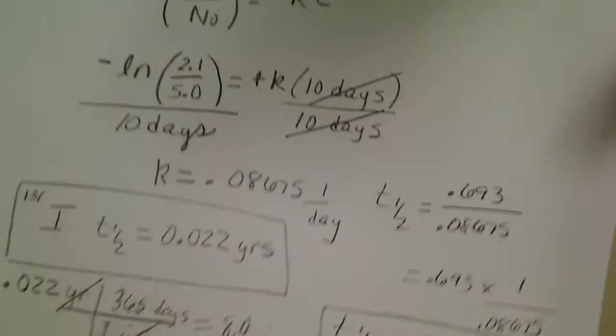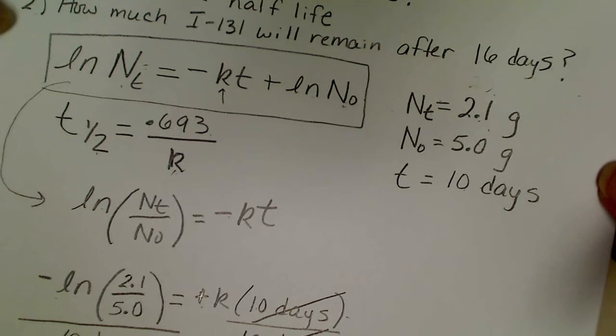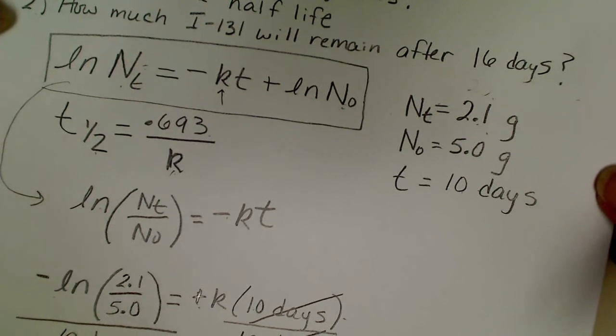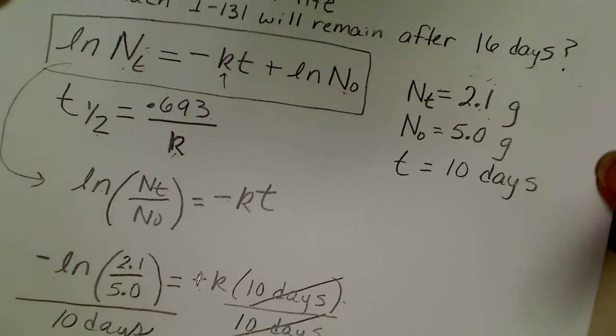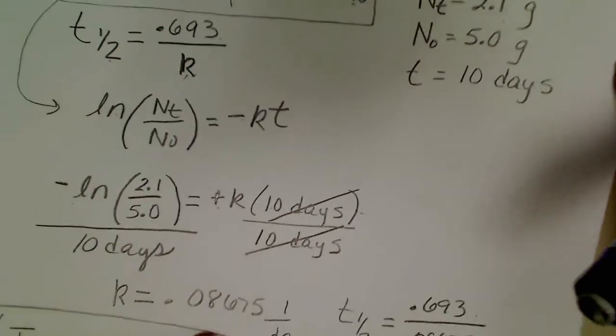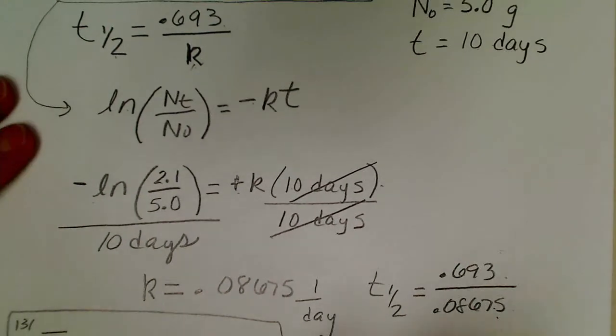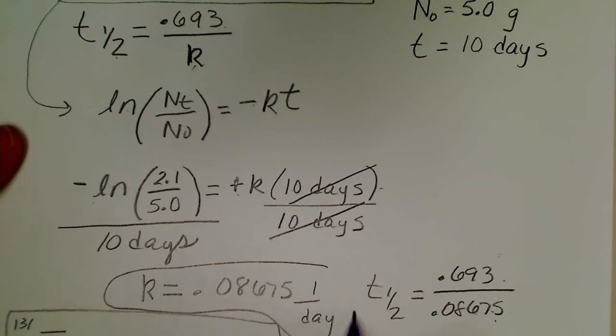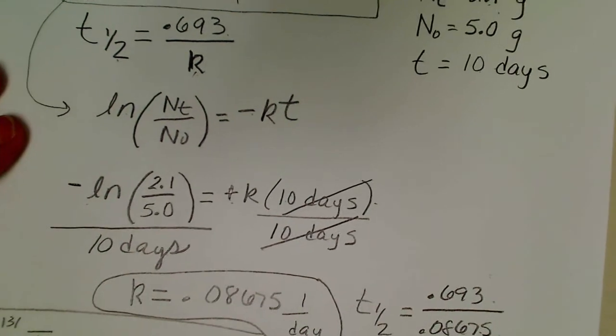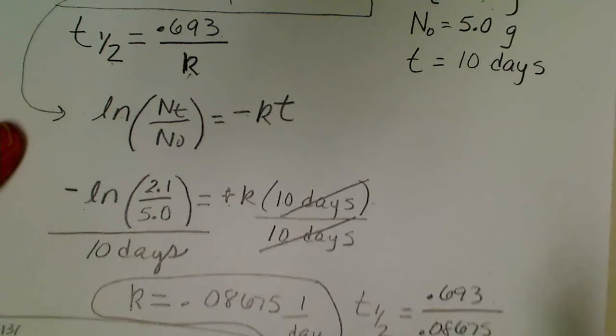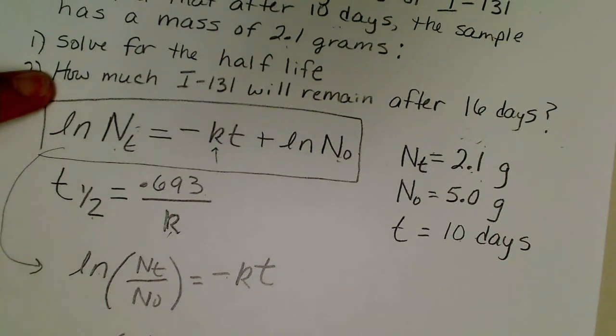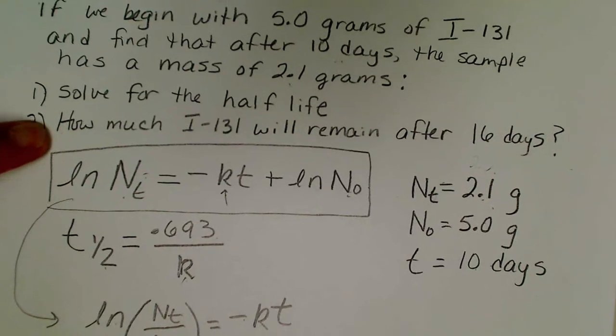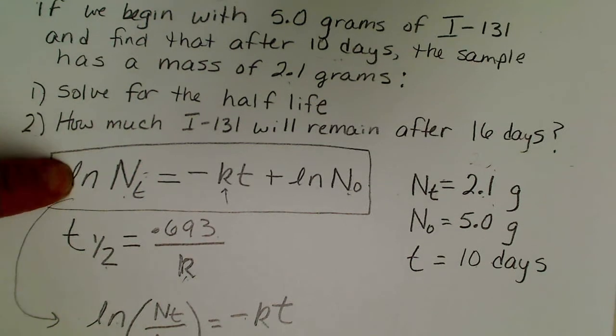Now that we have the k value which we had to solve for in order to find the half-life, then we can answer the second question. The second question is how much iodine-131 will remain after 16 days, so I'm going to rewrite this equation on a new sheet of paper.